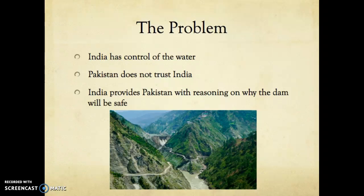India provides Pakistan with reasoning on why the dam will be safe. India has another project down the river called the Salal Project, and since it is after the Baglahar Dam and before Pakistan, if India did anything to stop the flow of water or to send excess flows down, then they would ruin their Salal Project, which is downstream from the Baglahar Dam. Why would India want to mess up their own project? That is what they are telling Pakistan, and this is the reasoning for why they will follow the rules and the dam will be fine.